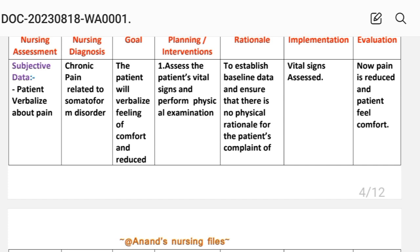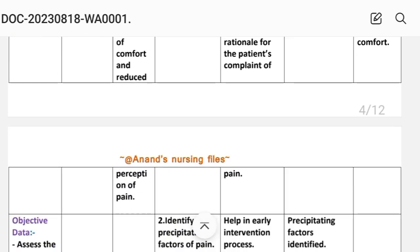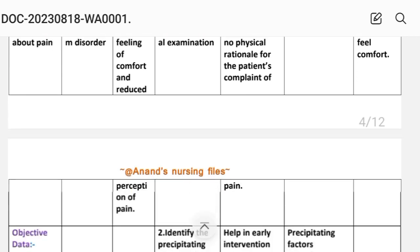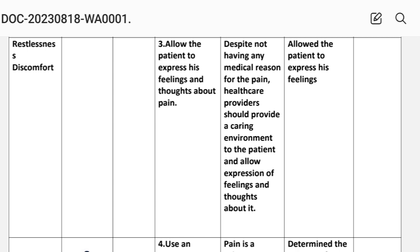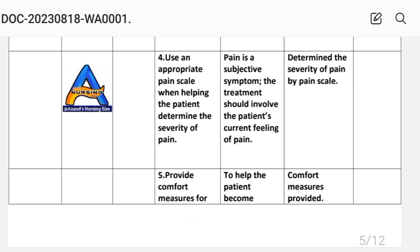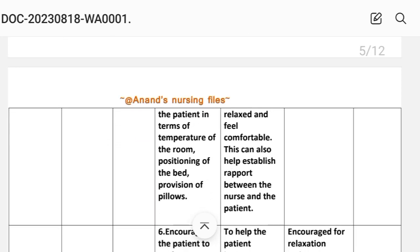Interventions for chronic pain: First, assess the patient's vital signs and perform a physical examination to establish baseline data and ensure there is no physical rationale for the complaint of pain. Second, identify precipitating factors of pain to aid early intervention. Third, allow the patient to express feelings and thoughts about pain; healthcare providers should provide a caring environment. Fourth, use an appropriate pain scale to help the patient determine the severity of pain, as pain is a subjective symptom.